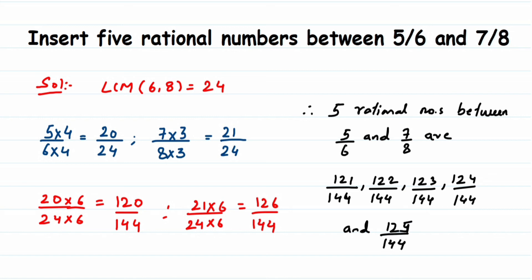You may think: we multiplied by six and got this answer — what if you multiply by some other number? You will get a different answer, and that's fine. It's not necessary that everyone gets the same answer; it depends on what number you're multiplying by. There are infinitely many rational numbers between any two rational numbers, so your answer doesn't need to match the textbook. The method should be the same — you can apply this technique for any similar question.